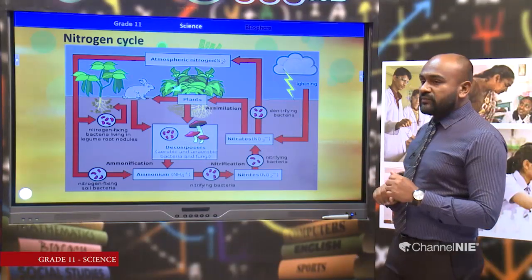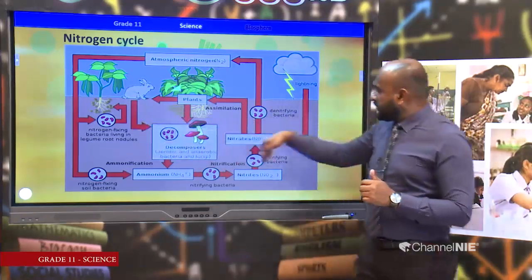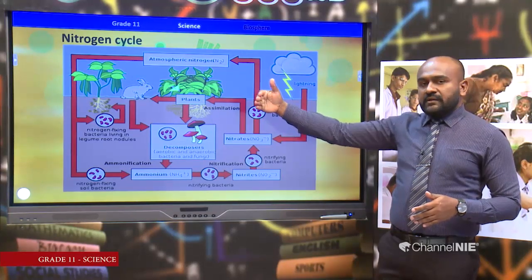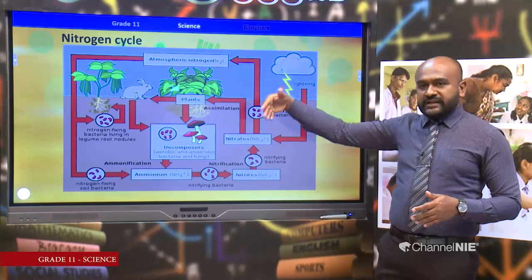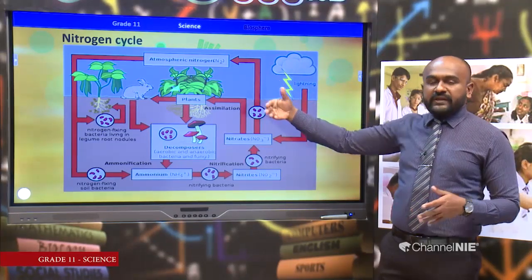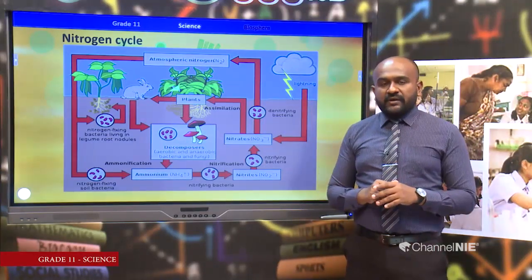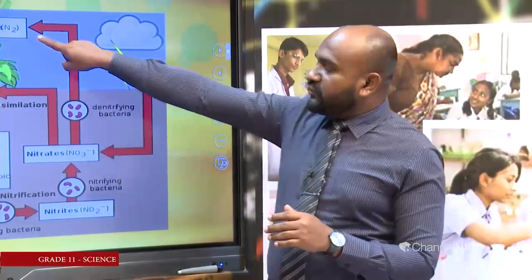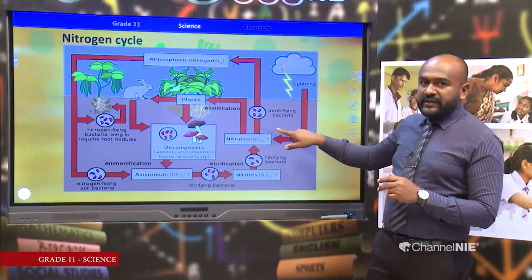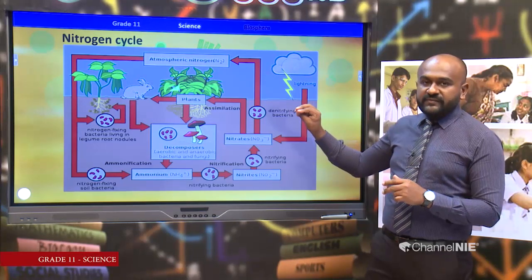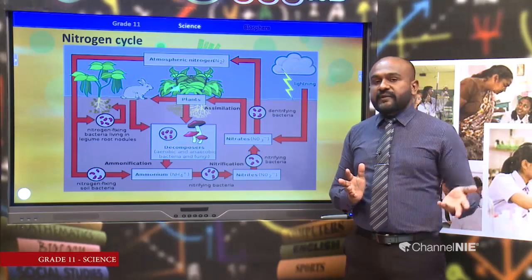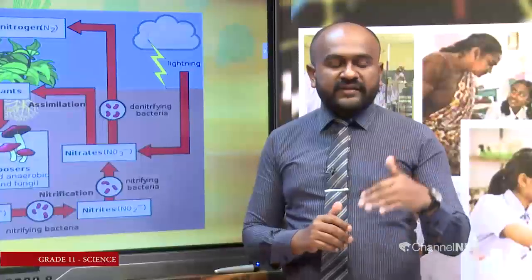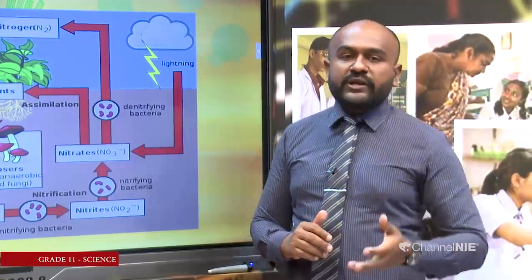Does it look like a cycle now? Biological fixation and atmospheric fixation show how nitrogen in the air comes to soil. But to be a cycle, this nitrogen should go back to the air. This is called denitrification. In denitrification, nitrate ions are converted into nitrogen gas — that is done by denitrifying bacteria like Pseudomonas and Thiobacillus. These bacteria can be found in waterlogged soil, near river banks or in marshy lands, and they convert nitrate ions back into nitrogen gas, so it goes back to the environment.